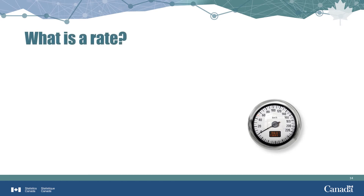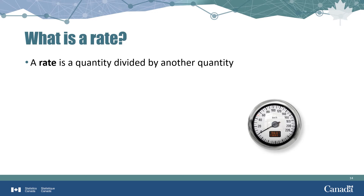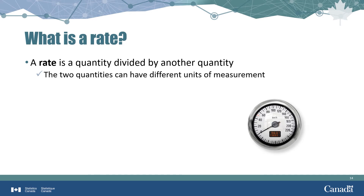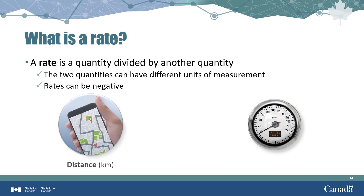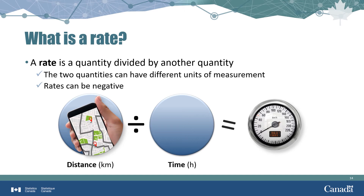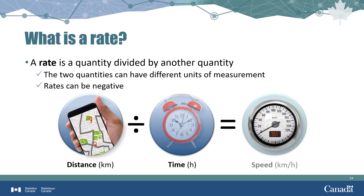Let's move on to rates. The simplest definition of a rate is that it is one quantity divided by another quantity. Both proportions and ratios could qualify as rates, so what is the difference? Proportions and ratios are commonly used to compare quantities with the same unit of measurement, such as counts of cards. In a rate, the two quantities often have different units — for example, speed is distance in kilometers divided by time in hours, giving units of kilometers per hour.